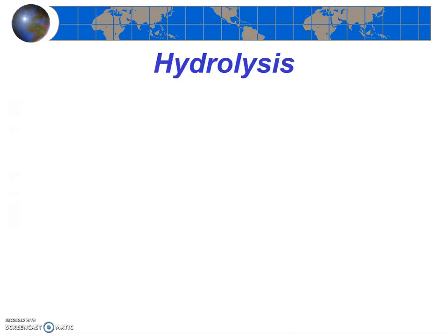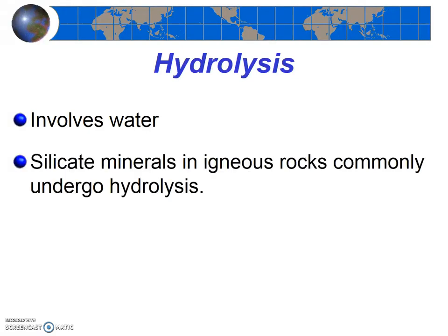A second form of chemical weathering is hydrolysis. Like oxidation, hydrolysis is a chemical weathering process that changes the mineral composition of the rock. Also like oxidation, water is involved. Silicate minerals, which are the most abundant mineral class in the Earth's crust, are generally susceptible to hydrolysis. In hydrolysis, the water molecule actually gets incorporated into the new mineral structure. Generally, hydrolysis products are softer and weaker than the original minerals in a rock.